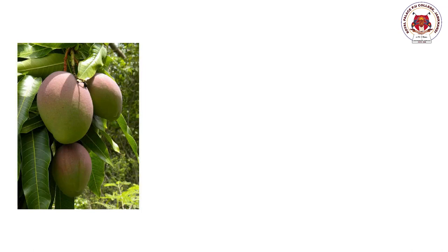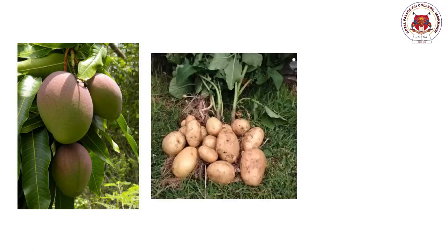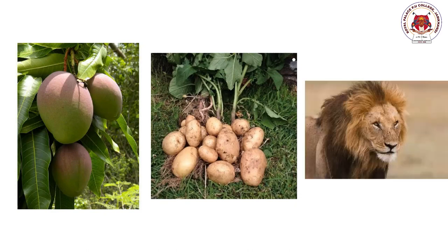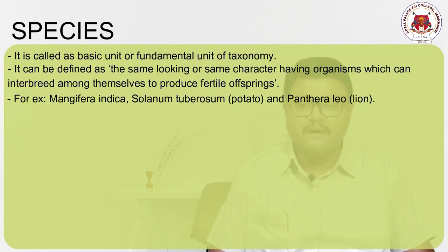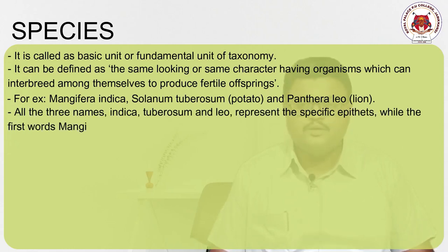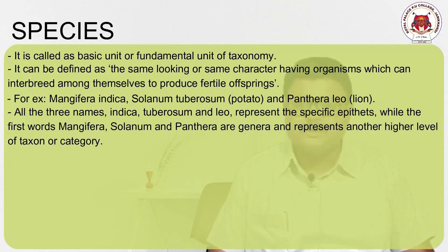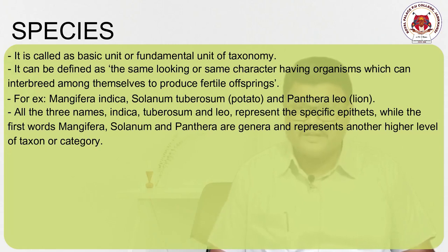The three examples are: Mangifera indica for mango, Solanum tuberosum for potato, and Panthera leo for lion. All three names contain two words each. Please refer to my topic on binomial nomenclature for full details, but in short, every organism must have two words in its name — the first word is the genus name and the second is the species name or specific epithet.